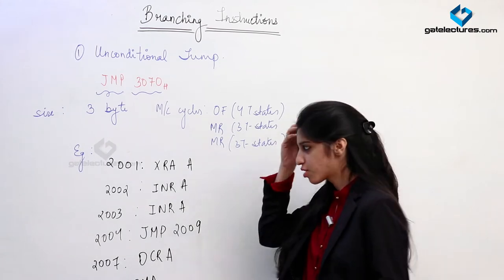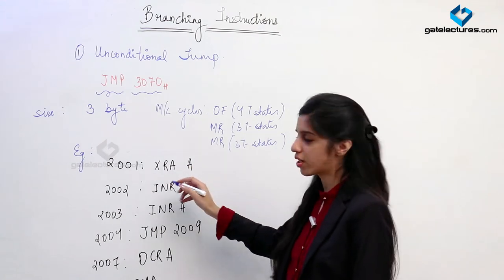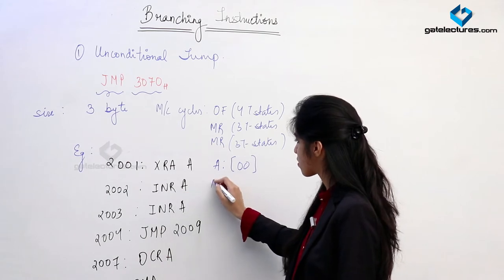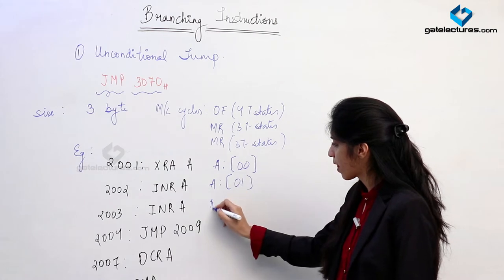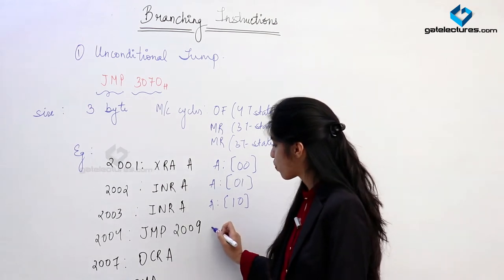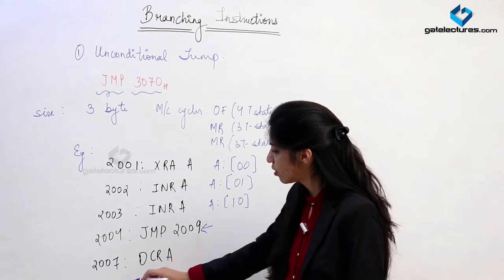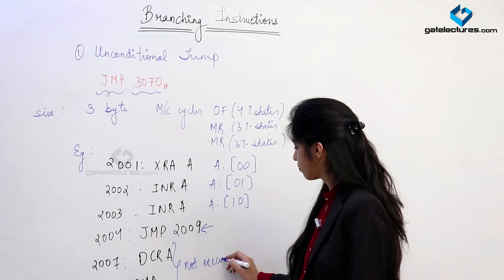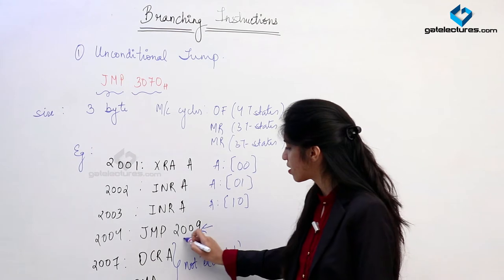What happens in this program: XRA A means A is XORed with its own contents, so contents of A become 00. After INR A, value of A becomes 01. Again incrementing A, so A becomes 02. When we reach the JMP instruction, memory locations 2007 and 2008 are not going to be executed. Simply the program counter is going to be overwritten with 2009.